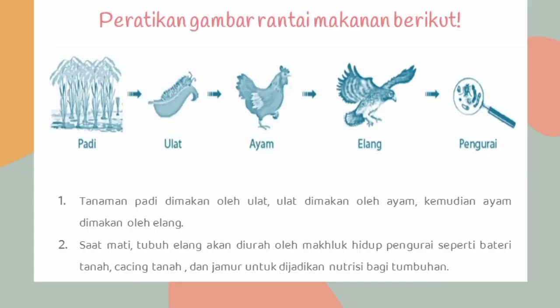Perhatikan gambar rantai makanan berikut. Tanaman padi dimakan oleh ulat. Ulat dimakan oleh ayam. Kemudian ayam dimakan oleh elang. Saat mati, tubuh elang akan diurai oleh makhluk hidup pengurai seperti bakteri tanah, cacing tanah, dan jamur untuk dijadikan nutrisi bagi tumbuhan.